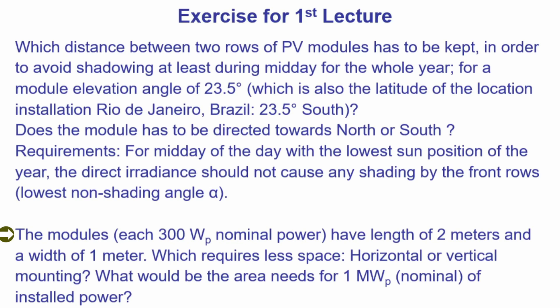Then we have some data of the module. The modules have 300 W each under standard test conditions. They have a length of 2 meters and a width of 1 meter. And then there's another question, which requires less space, the horizontal or the vertical mounting? And how much area we need to make a PV power plant with 1 megawatt under standard test conditions or 1 megawatt nominal?